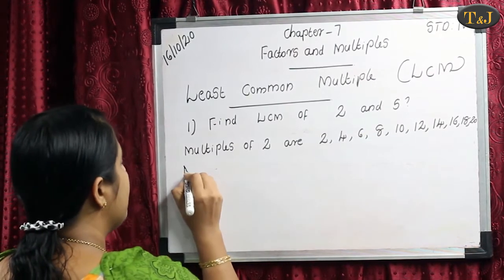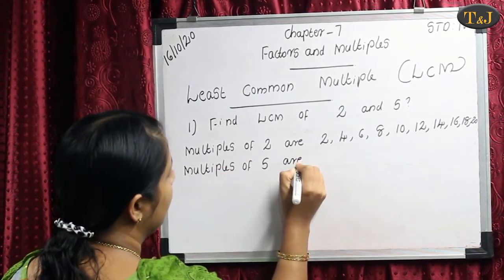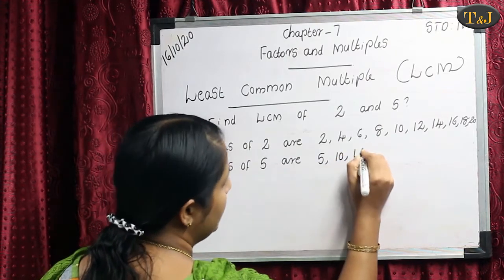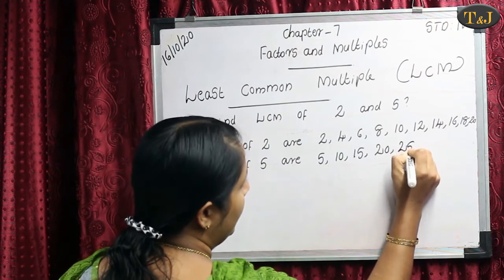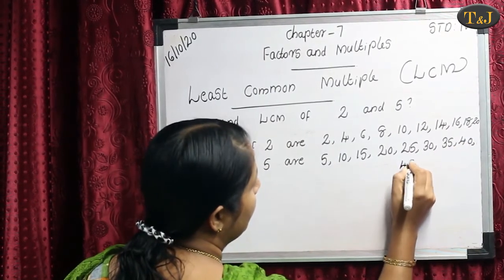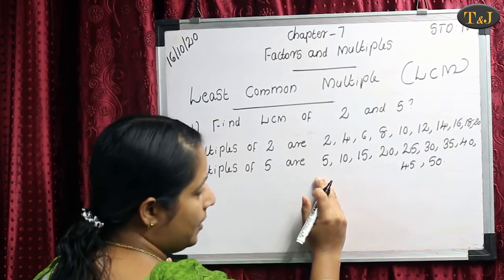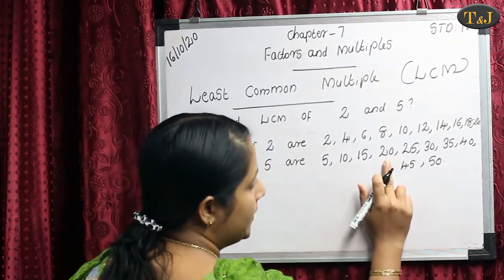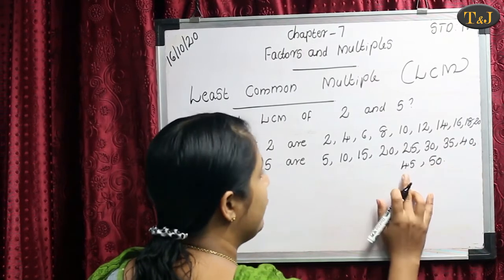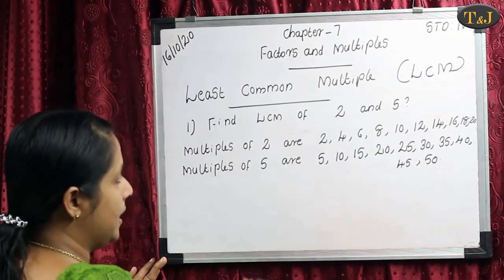Next we find the multiples of 5. Multiples of 5 are: 5×1=5, 5×2=10, 5×3=15, 5×4=20, 5×5=25, 5×6=30, 5×7=35, 5×8=40, 5×9=45, 5×10=50. We write both the 10 multiples of the given numbers — first the 10 multiples of 2, then the 10 multiples of 5.